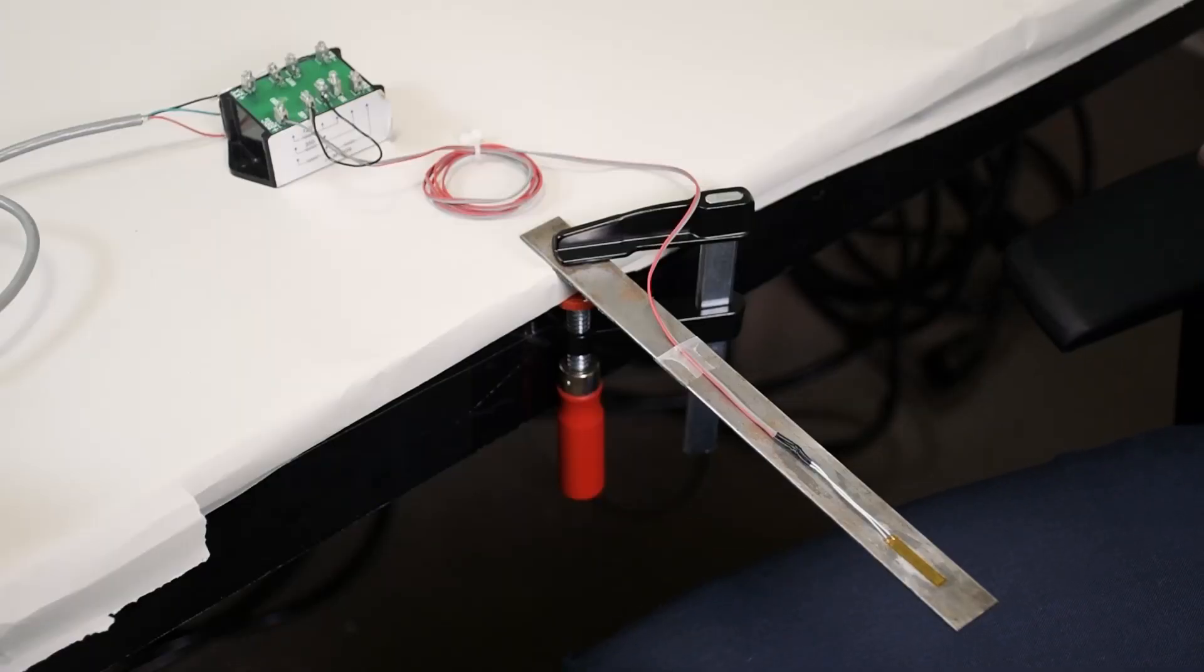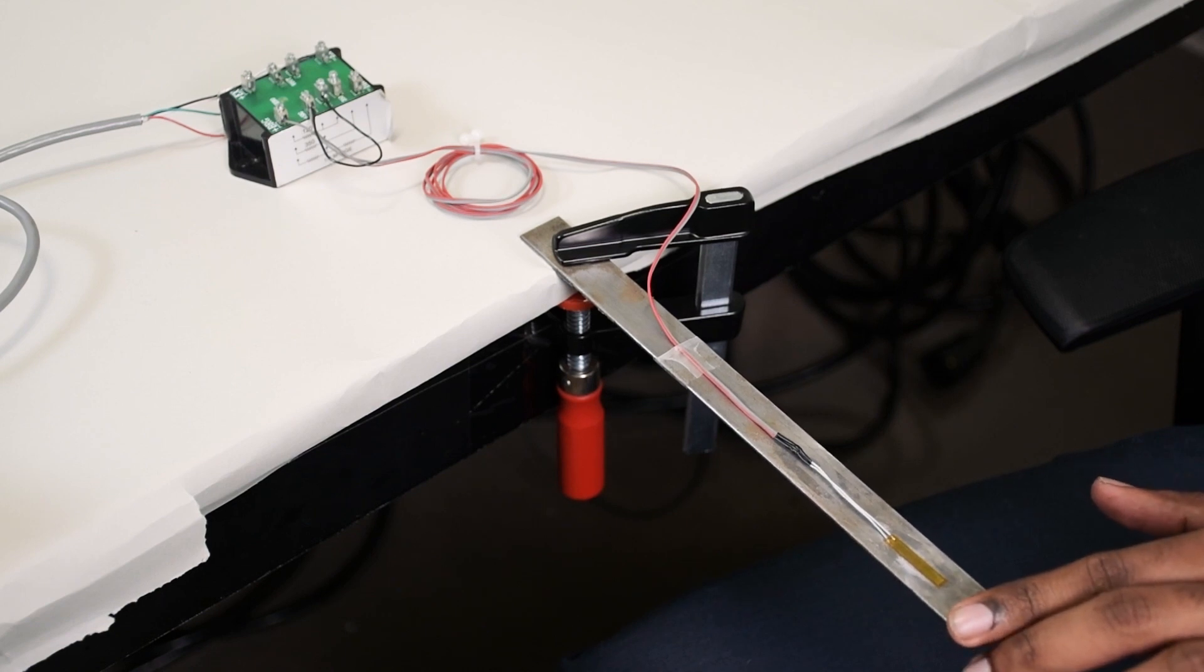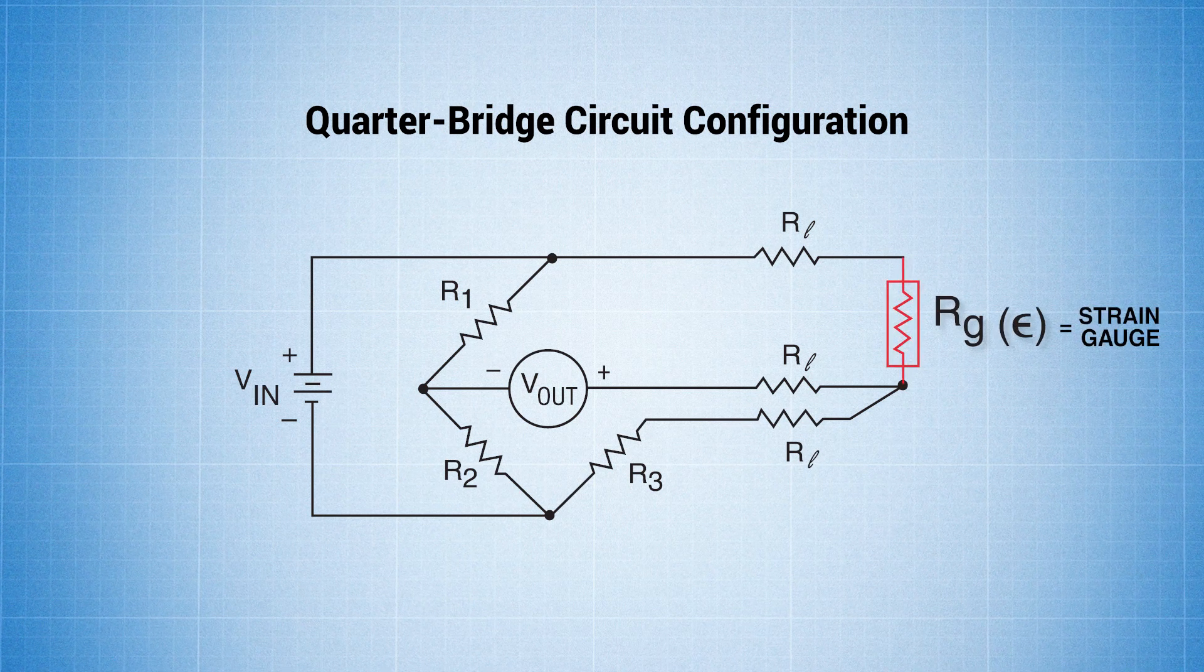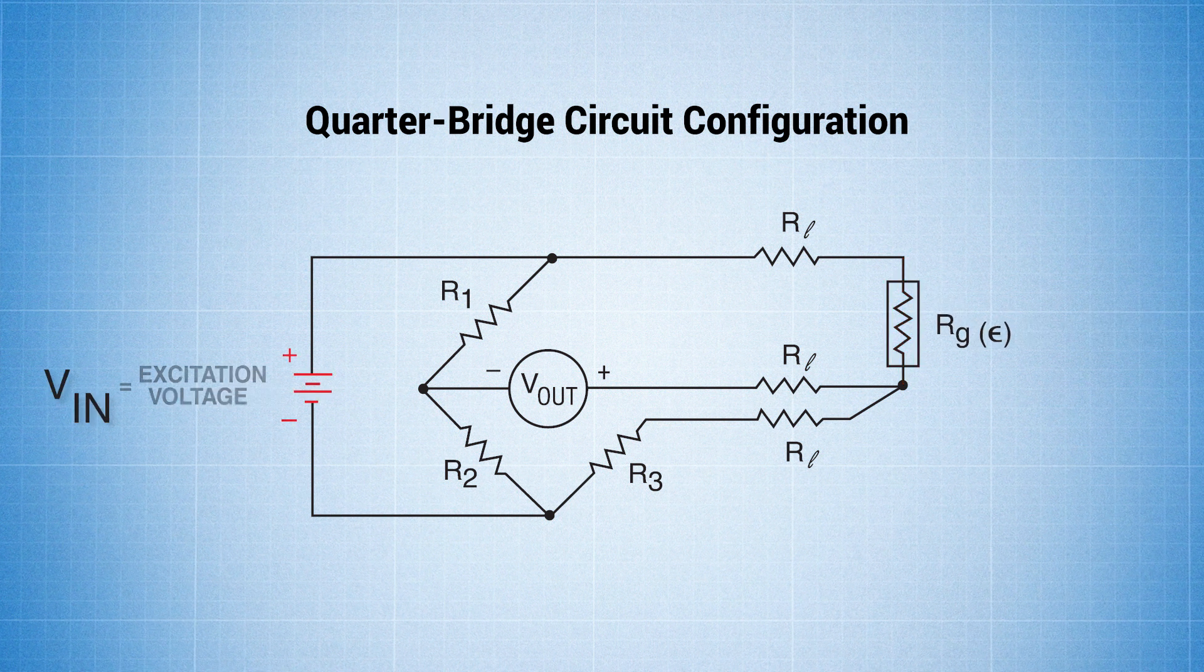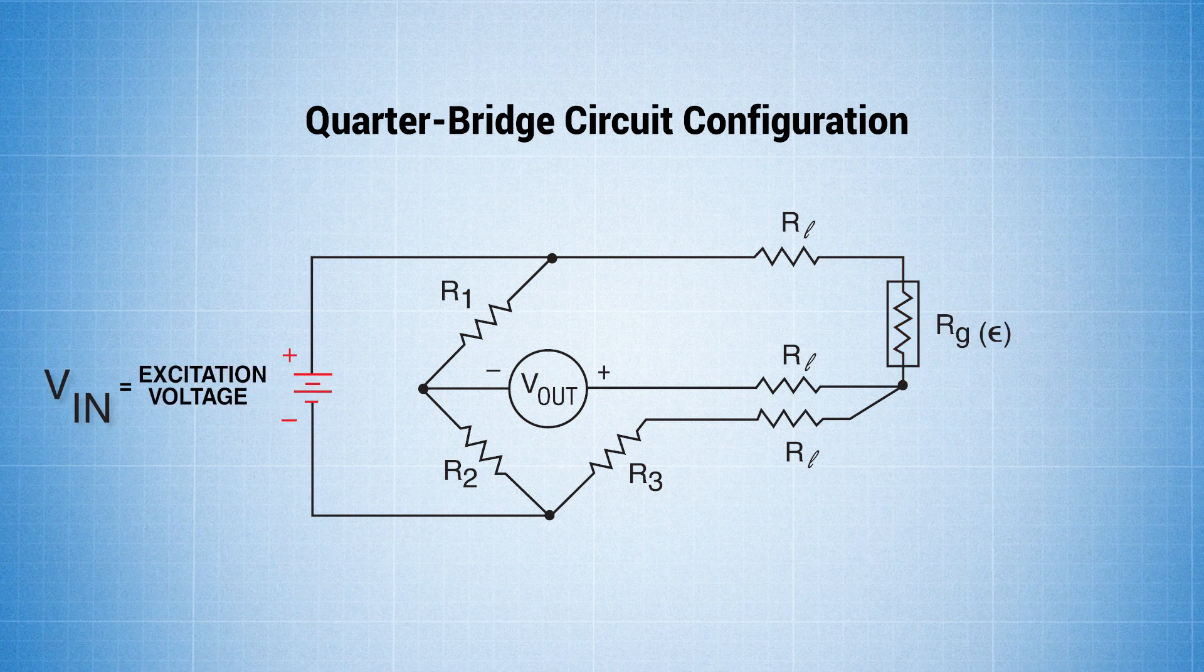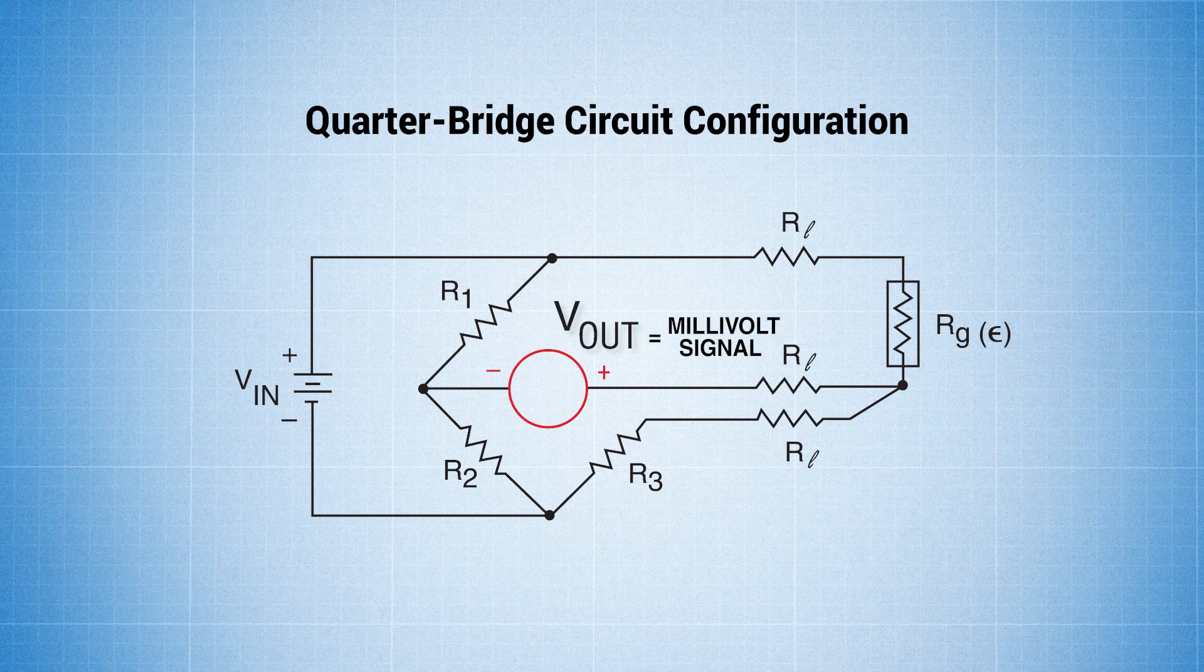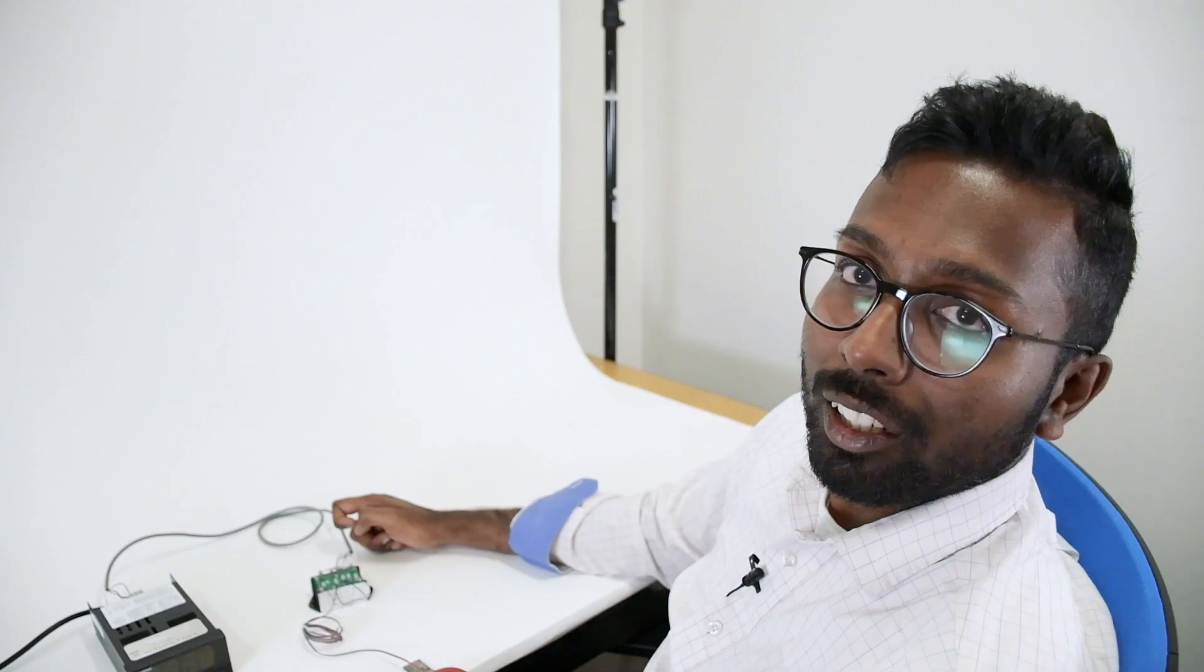If you look at this configuration, there's just one active strain gauge, so this constitutes a quarter bridge in the Wheatstone network. In the quarter bridge configuration, Rg is the strain gauge that we have bonded onto the stainless steel flat, Vin is the excitation voltage going into the Wheatstone network, and Vout is the millivolt signal that we get from the BCM that goes back to the DP25B-S unit.